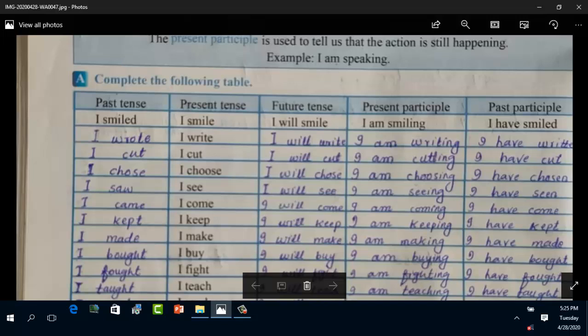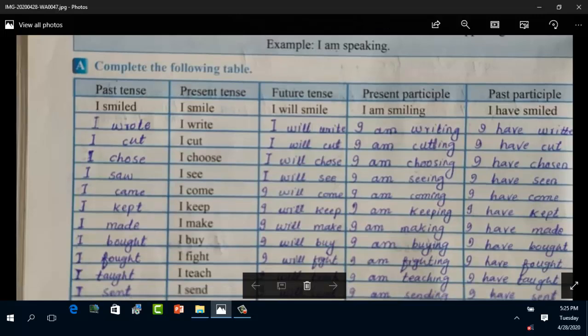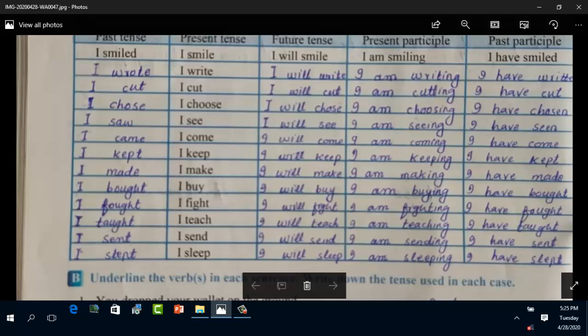Now the third one is I cut, past tense I cut, the three forms of this verb are the same: cut, cut, cut. Future tense I will cut, present participle I am cutting, past participle I have cut. The next one is choose: I choose present, past tense I chose, future tense is I will choose, present participle I am choosing, past participle I have chosen. Similarly, the whole table is completed for you here. You have to read it thoroughly and learn. This is your homework.